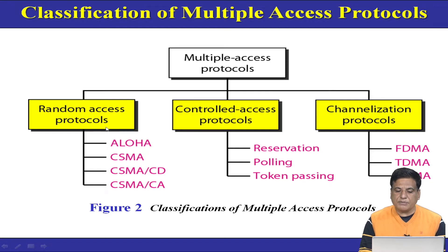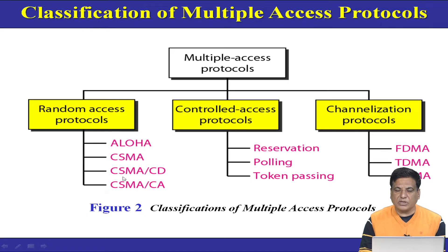Under the random access protocols, we have ALOHA. In today's lecture, we will focus on how the ALOHA protocol works. The second protocol is CSMA, which stands for Carrier Sense Multiple Access. CSMA/CD stands for Carrier Sense Multiple Access Collision Detection, used for wired networks. CSMA/CA stands for Carrier Sense Multiple Access Collision Avoidance, used in wireless networks.